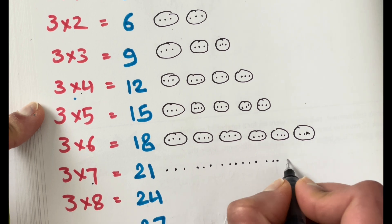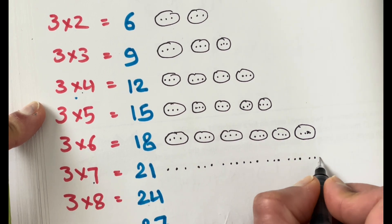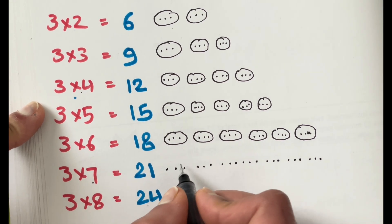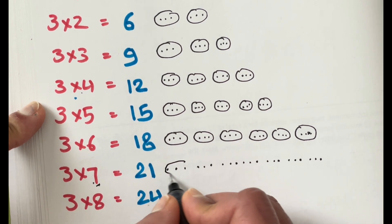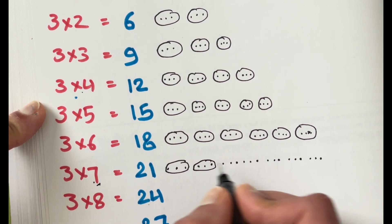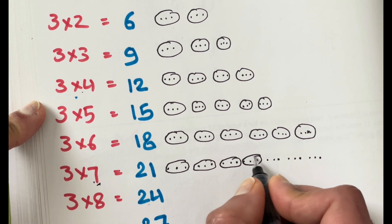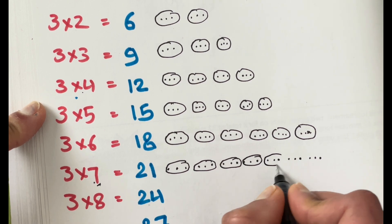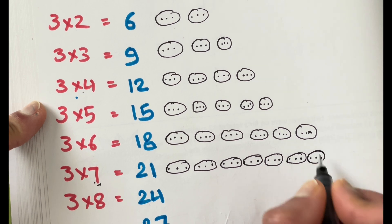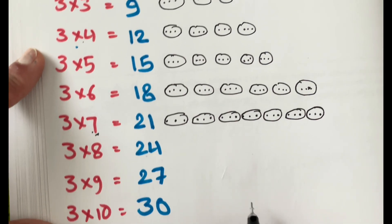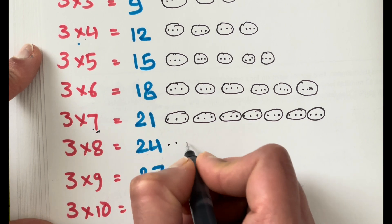One, two, three, four, five, six, seven, eight, nine, ten, eleven, twelve, thirteen, fourteen, fifteen, sixteen, seventeen, eighteen, nineteen, twenty, twenty-one. We will make seven groups of three: one group, two group, three groups, four groups, five groups, six group, and seven groups.